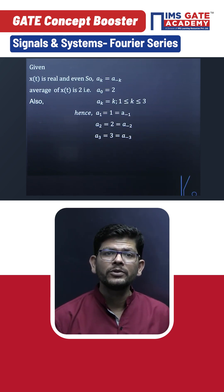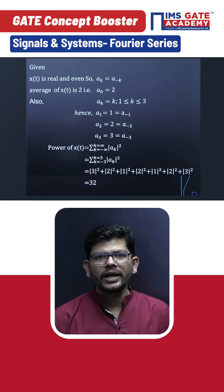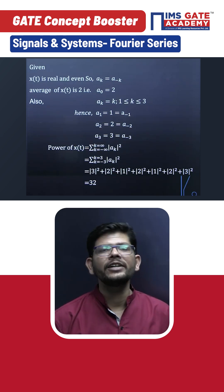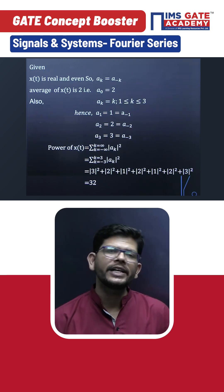Now average power, by using Parseval's theorem, is given by summation modulus of a_k squared, where k is from minus 3 to 3. Now put all the values of k and expand and add all these values, you will get your answer as 32.